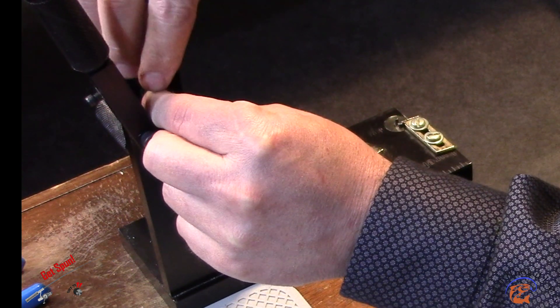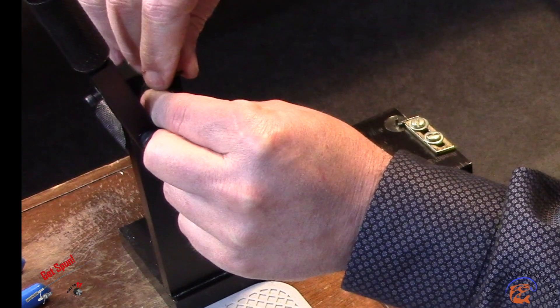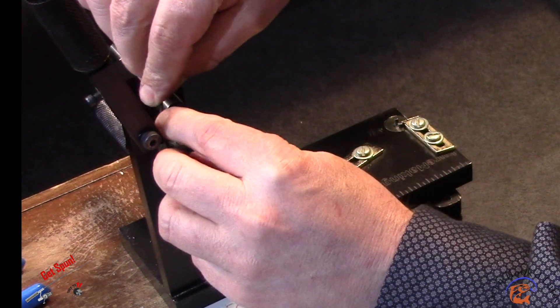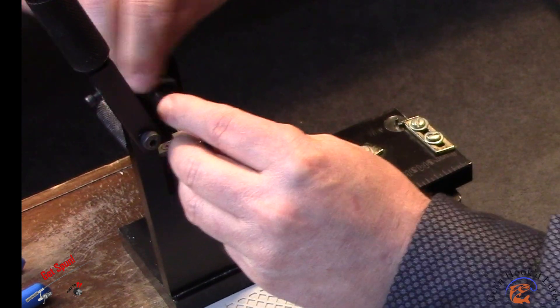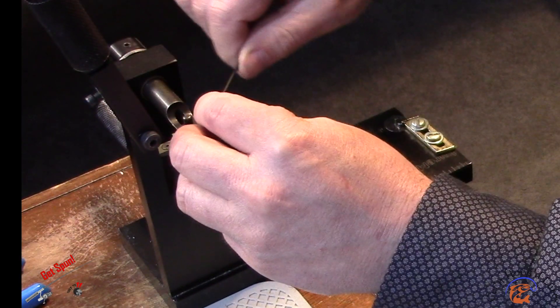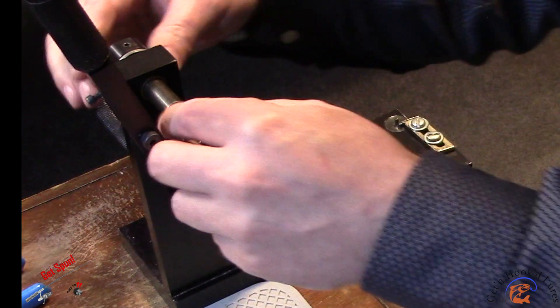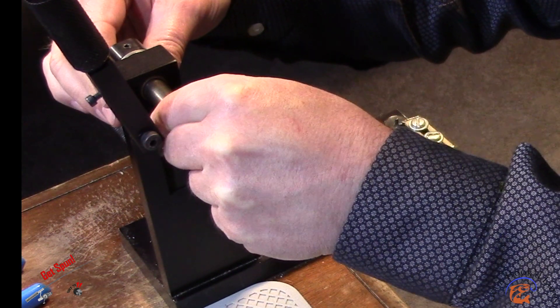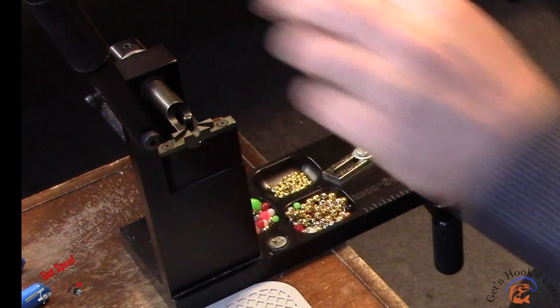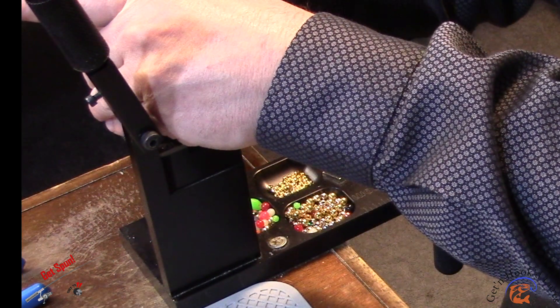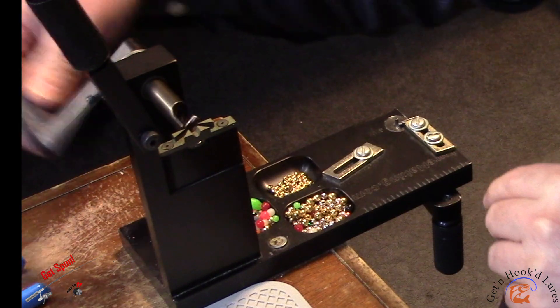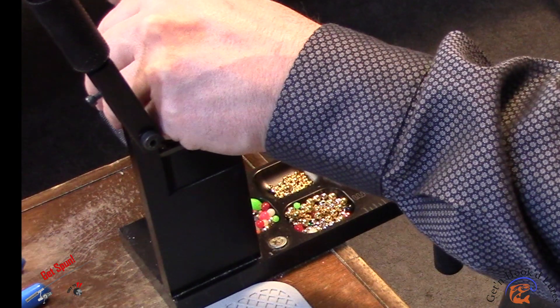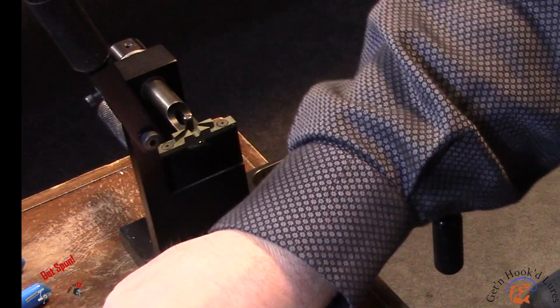Just take it nice and slow and make sure everything's aligned before you start threading them in. Because they're a fine thread, you don't have to torque them in super tight when you're tightening your screw up—just snug is good. Make sure that that's not touching your die, nice and snug.